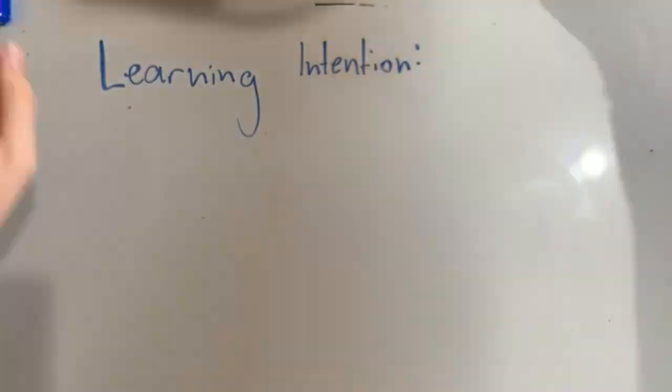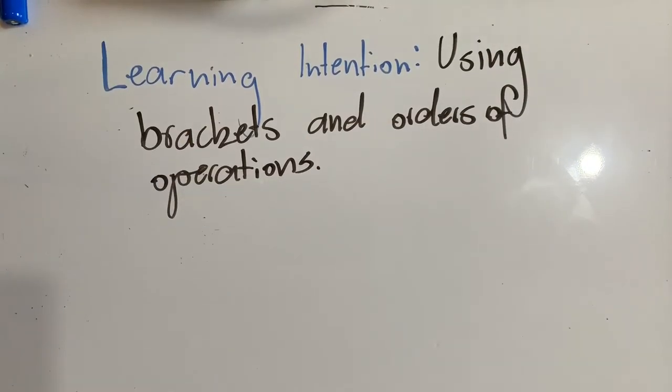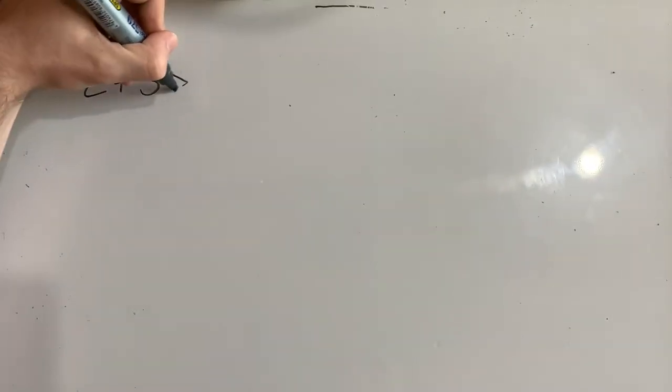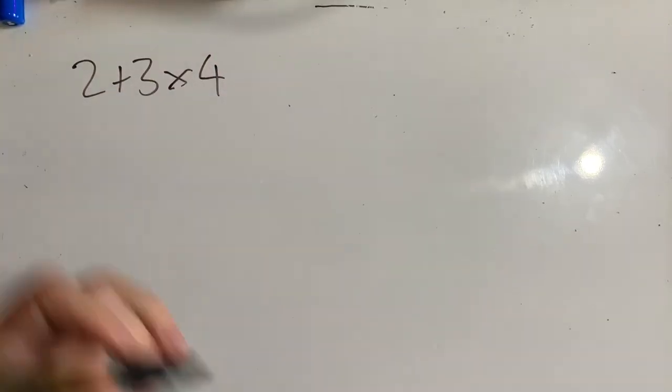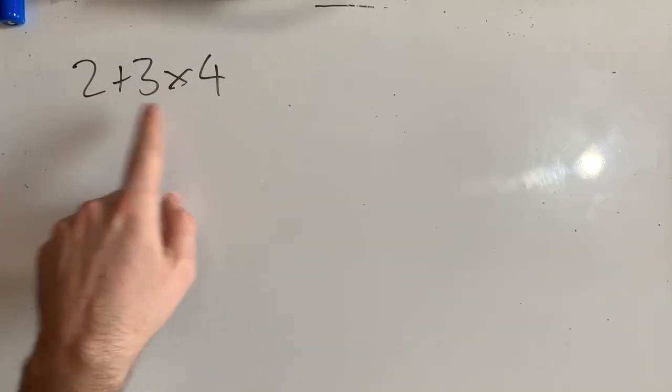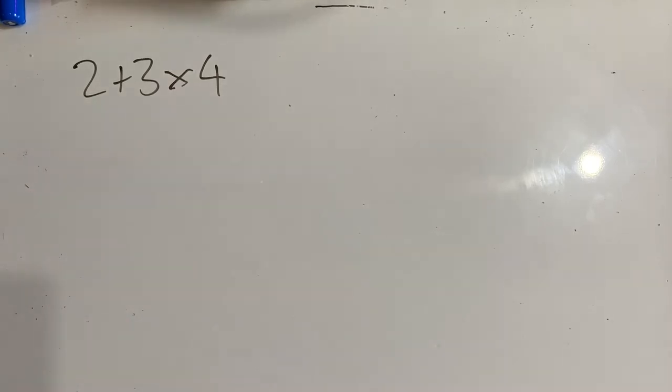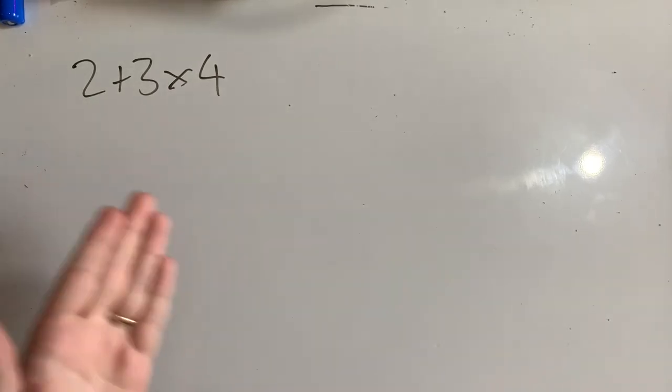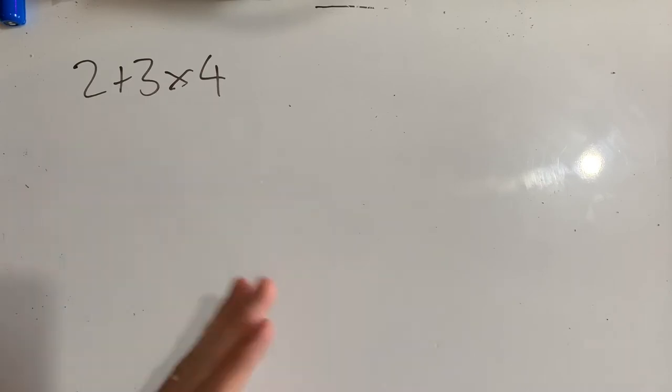In this video, we'll be learning to use brackets and orders of operations. Let's say I give you this problem: 2 plus 3 times 4. How would you go about solving this problem? Would you work left to right? Would you add these numbers before you multiply these numbers? Would you multiply these numbers before you add these numbers? When we have multiple operations in an expression or equation, there are some rules that we need to follow in order to get the right solution.